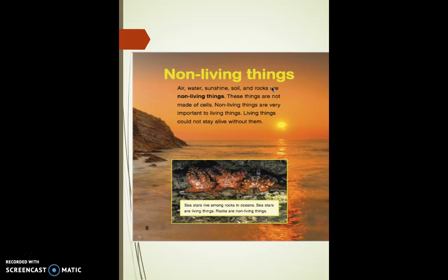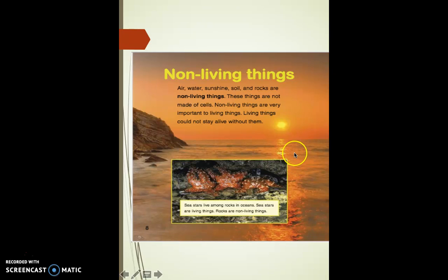Non-living things. Air, water, sunshine, soil, and rocks are non-living things. These things are not made of cells. Non-living things are very important to living things — living things could not stay alive without them. Caption: sea stars live among rocks in oceans. Sea stars are living things. Rocks are non-living things.